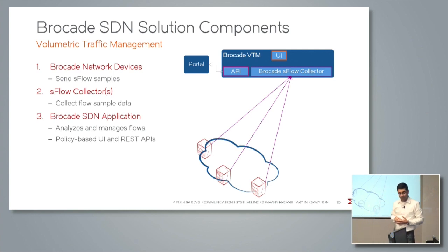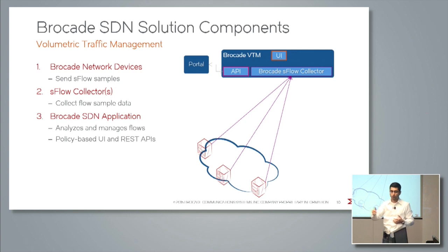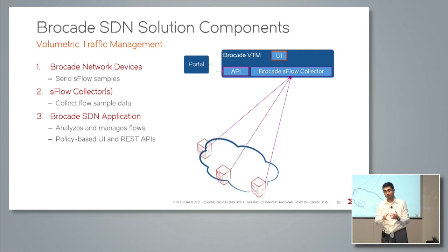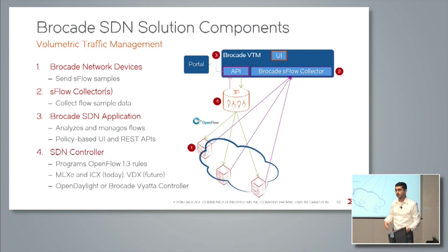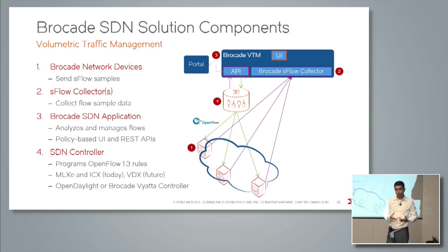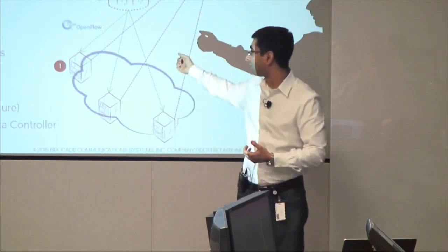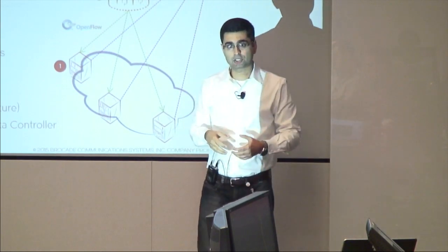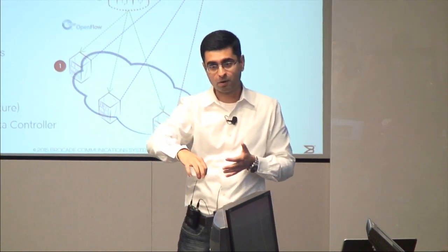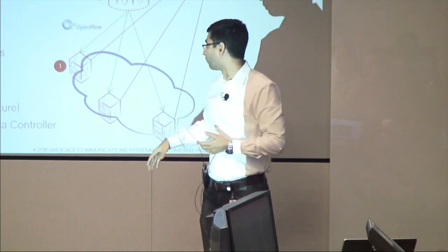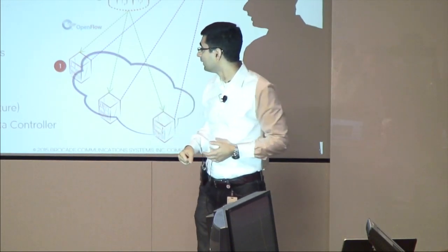It analyzes those samples, and if there is any policy match — for example, a 500 Mbps flow coming from a specific source IP that I want to redirect to another tool for further scrubbing, or a bad source IP that I simply want to drop — the application analyzes the SFlow samples based on policy matches and performs the mitigation actions. It performs these mitigation actions through the Open Daylight controller — either the open source ODL controller or the Brocade Viata controller — which in turn performs OpenFlow actions. The Brocade VTM application makes certain REST API calls to ODL, and ODL then performs OpenFlow 1.3 actions implemented on our boxes.